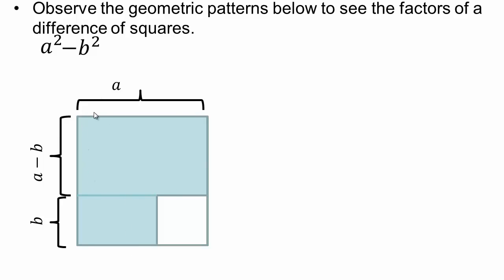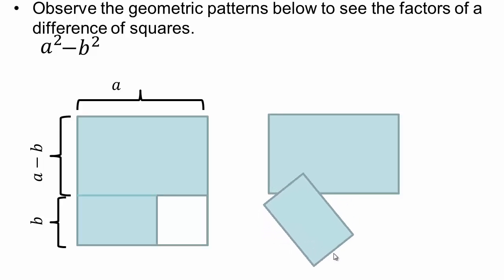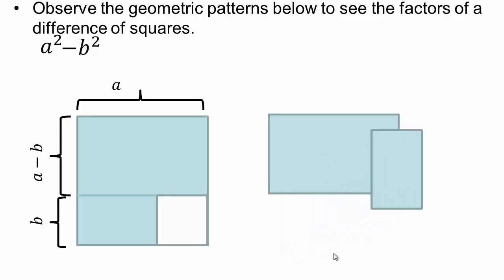I can split it. This part already is a rectangle. I'm going to have to play with these two pieces and see if I can move this somewhere interesting. So let's move it. From here to here it's a, but from here to here it's b. So this part from here to here is going to be a minus b. From here to here was a, and I took away this b part, so this part is also a minus b.